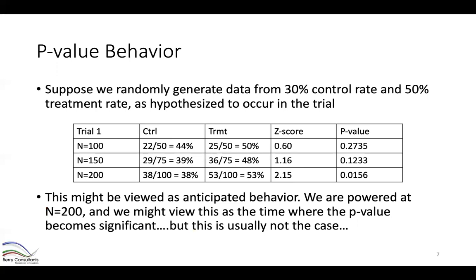The first row shows data at 100 subjects, the second at 150 subjects. The next two columns show observed data on the control and treatment arms. At this first look at 100 subjects we have an unimpressive difference between 44% and 50%. The last two columns show a standardized test statistic (z-score) and corresponding p-value. In this particular trial, by 200 subjects our p-value was less than 0.025, but at earlier looks the p-value was above that threshold.